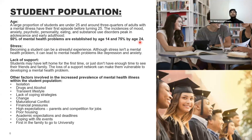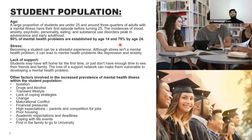50% of mental health problems are established by age 14 and 75% by age 24. The data shows most problems start from 14 years of age and reach maximum prevalence by age 24. A lot of things happen in the lives of teenagers and people in their early 20s.